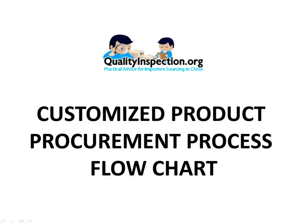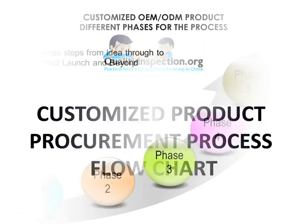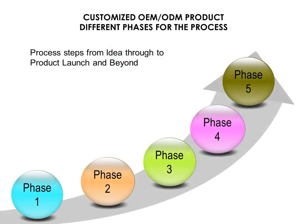Welcome to this video where we will be discussing the steps involved with the procurement process for a highly customized product. The process is broken down into five phases which covers initial concept idea through to production launch and beyond.